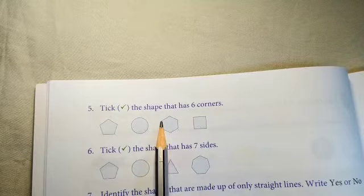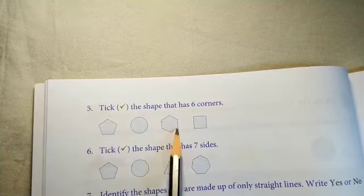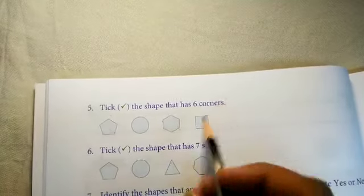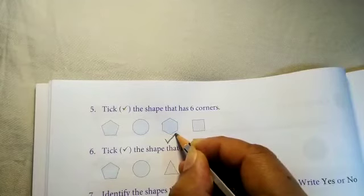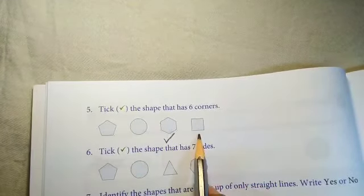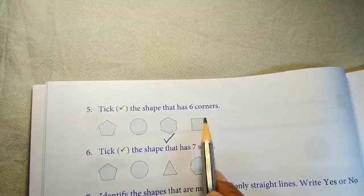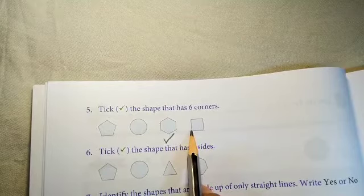The shape which is having six corners and sixth side it is called hexagon. So our question is that also we will tick on the shape which has six corners. And this is a square shape in that one, two, three and four corners are there.